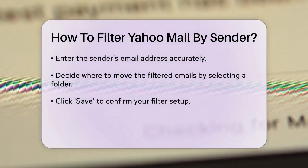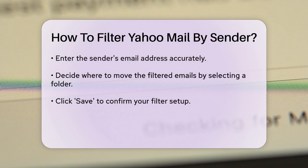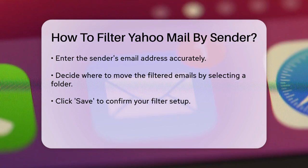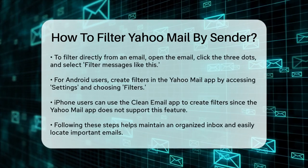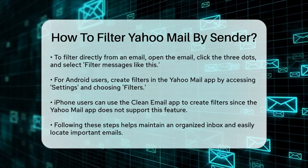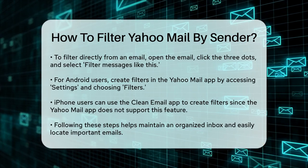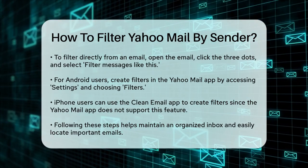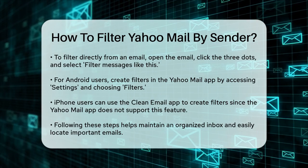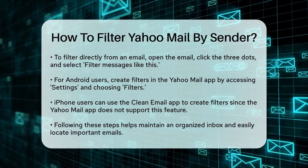On mobile, if you're using an Android device, you can create filters within the Yahoo Mail app. Open the app, tap your profile icon on the top left, select Settings, and then choose Filters in the General section. Tap the plus sign to create a new filter, add the sender's email address, and choose the folder where you want to move the emails.